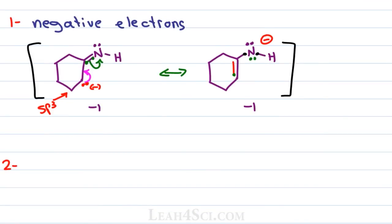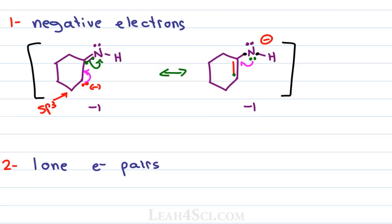If your molecule doesn't have negative electrons, the next thing to look for are lone electron pairs — but here's the key: you're not just looking for any lone pair; you're looking for electrons sitting on an atom that does not yet have a pi bond. Lone pairs on atoms that are already pi-bonded can't move further. So if a neutral atom has a lone pair and already has a pi bond, ask yourself: if I form another pi bond, are there any electrons to kick out?